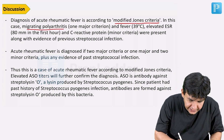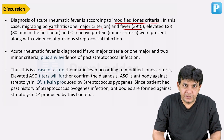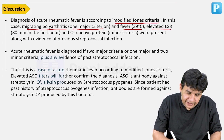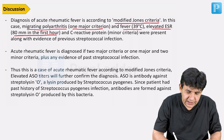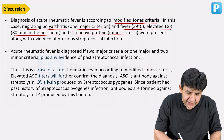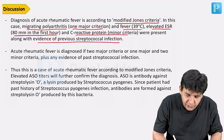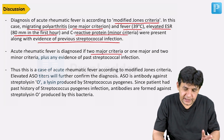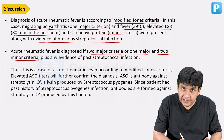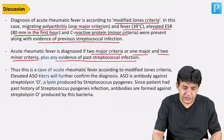In this case, the migrating polyarthritis is a major criterion. Fever of 39 degrees centigrade, elevated ESR of 80 mm in the first hour, and C-reactive protein — these are all minor criteria. They were present along with evidence of previous streptococcal infection, as also mentioned in the question. Acute rheumatic fever is diagnosed if two major criteria are present, or one major plus two minor criteria, plus any evidence of past streptococcal infection.